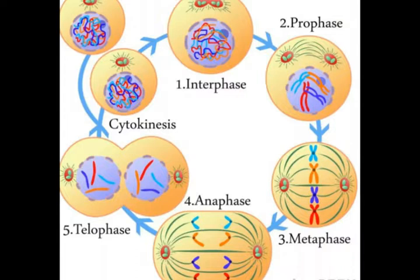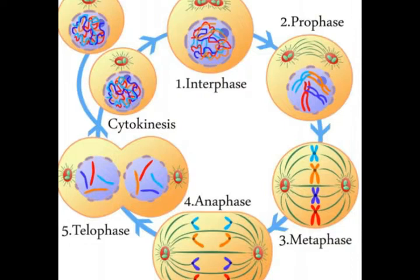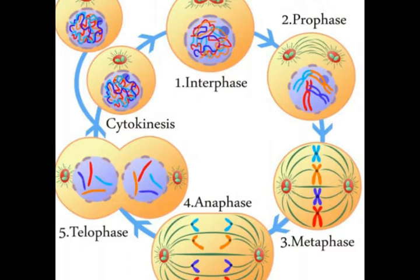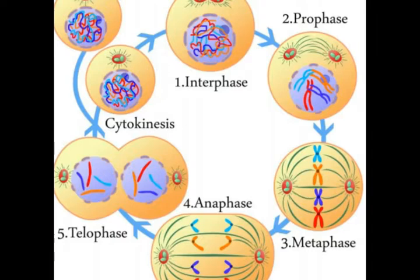Gamma-tubulin, a third form of this protein family, works together with other proteins to initiate the creation of microtubules in a process called microtubule nucleation. Two more proteins from this family, the delta and epsilon varieties, may play a part in cell mitosis, although research on these proteins is not as extensive.